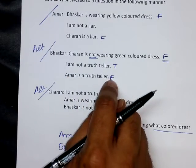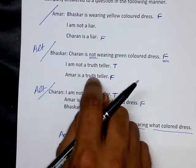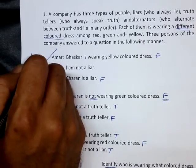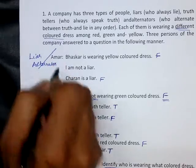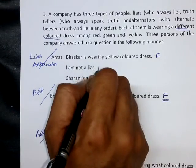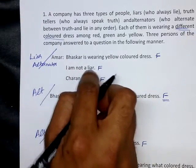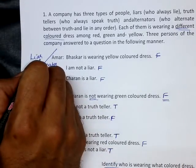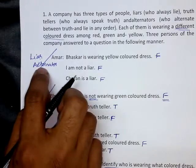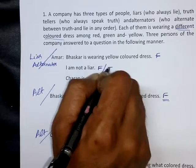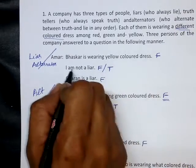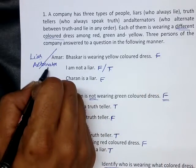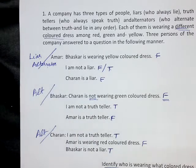'Amar is a truth teller' is what Bhaskar says, which is false — meaning Amar is not a truth teller. So Amar can be a liar or an alternator. If Amar is a liar, then 'Amar is not a liar' is false — false-false-false — there is no conflict. If Amar is assumed to be an alternator, then the pattern is false-true-false: 'I am not a liar' is true, meaning the person is not a liar but an alternator. I don't see any logical inconsistency.